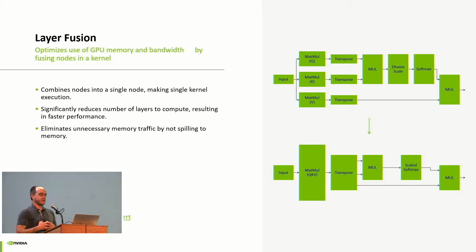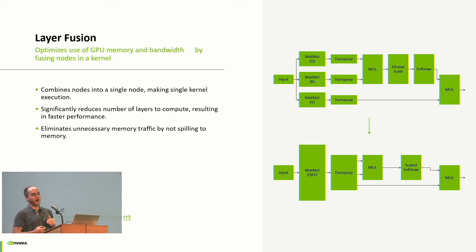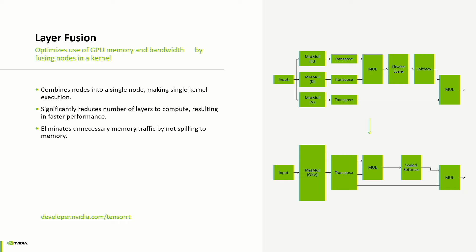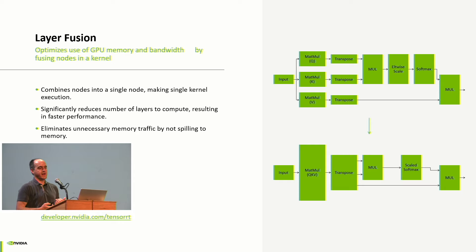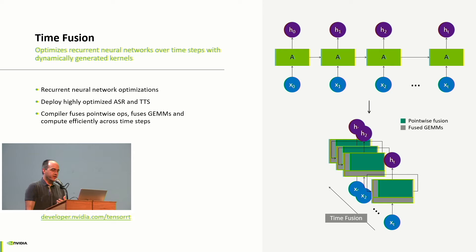Another main optimization is layer fusion. In the graph compiler world, graphs are drawn left to right, but neural networks draw graphs top to bottom. Vertical fusion fuses nodes that are dependent on each other — for example, elementwise and softmax get vertically fused into a scaled softmax. Horizontal fusion fuses peer nodes — the three matrix multiplications for Q, K, and V can be fused into a single node. Fusion reduces round-trips through memory, increases computational efficiency, and reduces kernel launch overhead.